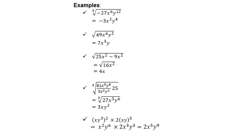Let's look at the first example: what is the cube root of negative 27 x to the power 6? The cube root of negative 27 is negative 3, because negative 3 times negative 3 times negative 3 is negative 27.